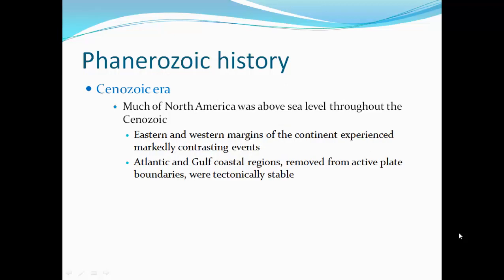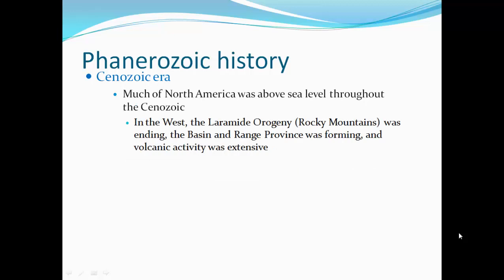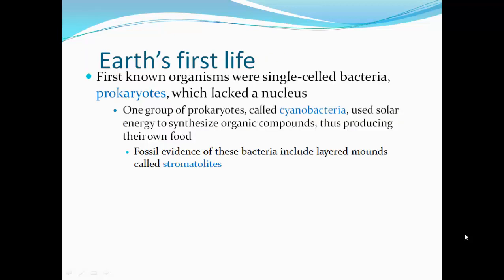During the Cenozoic era, much of North America was above sea level. The eastern and western margins of the continent experienced markedly contrasting events. The Atlantic and Gulf Coast regions, removed from active plate boundaries, were tectonically stable. In the west, the Laramide orogeny — the Rocky Mountains — was ending, the Basin and Range province was forming, and volcanic activity was extensive.